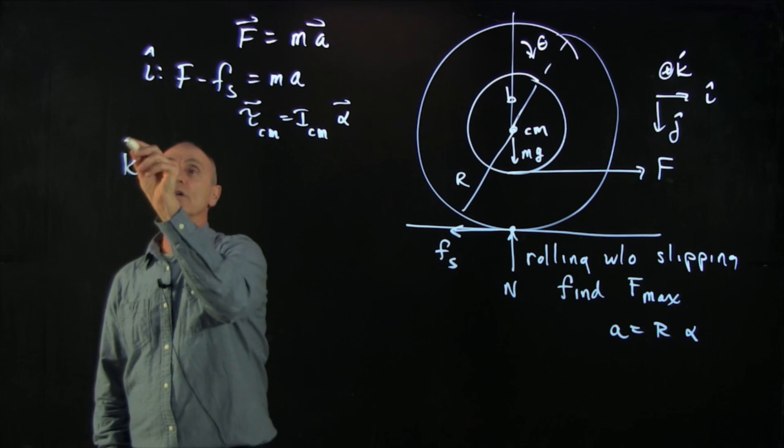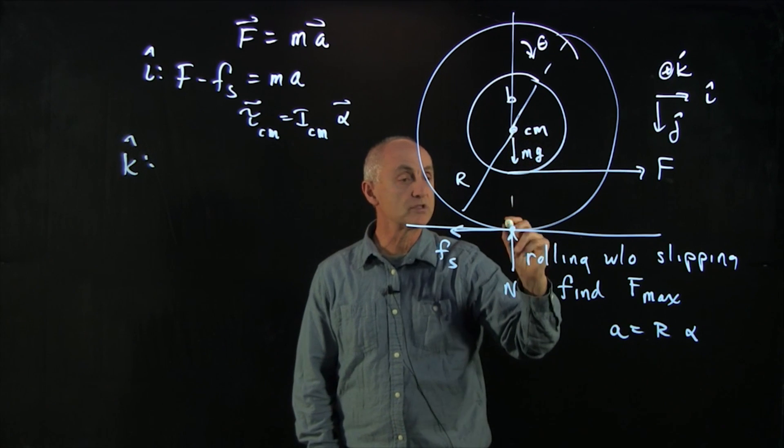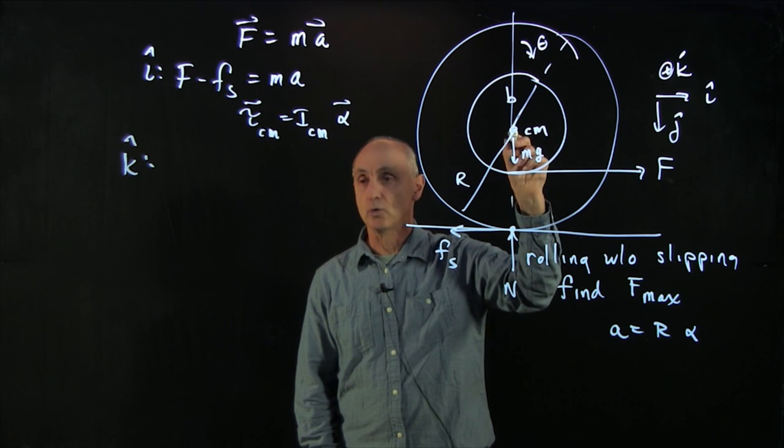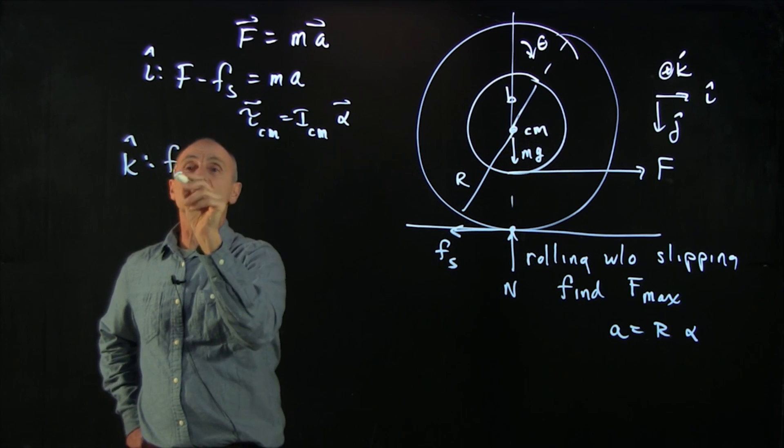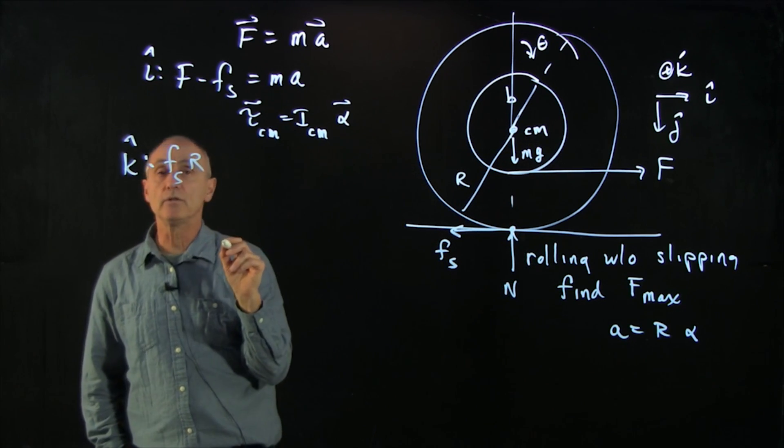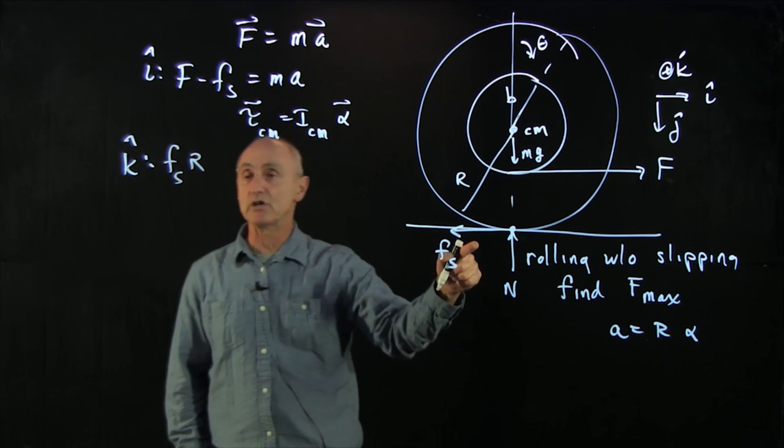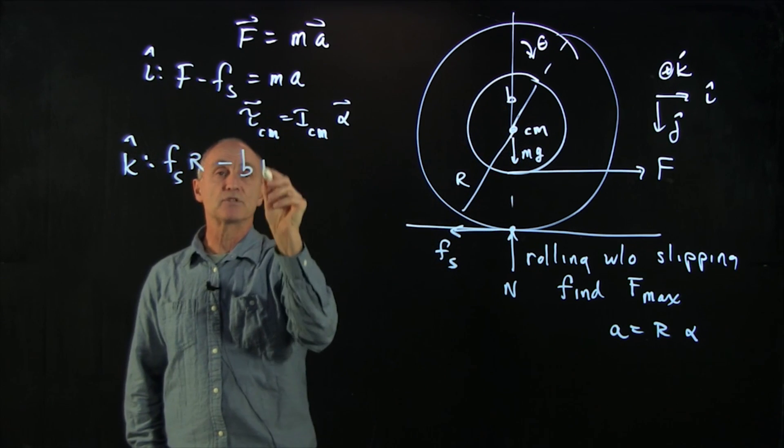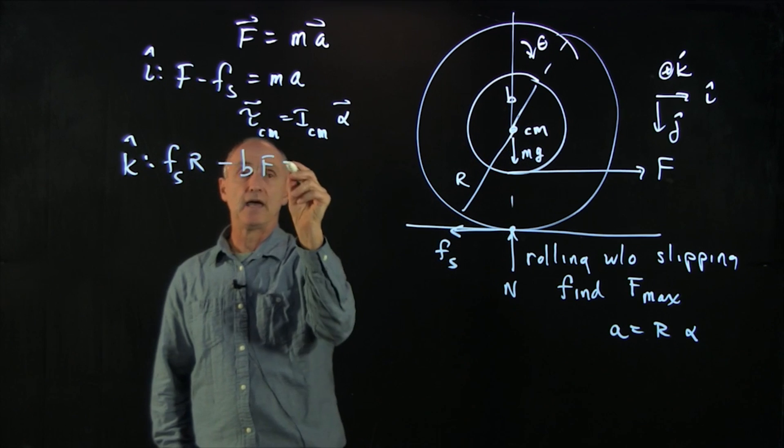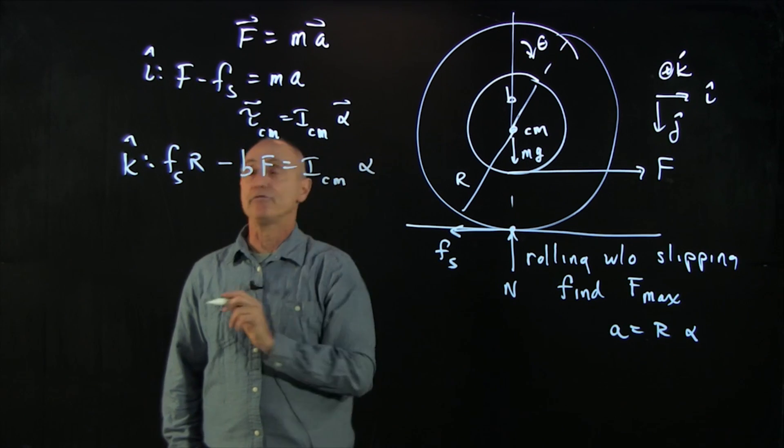So our torques, the normal force does not produce any torque about the center of mass, nor does gravity. So what we have is fs times the radius of the wheel. So that is the torque due to static friction minus b times the pulling force, f. And that's equal to I cm alpha.